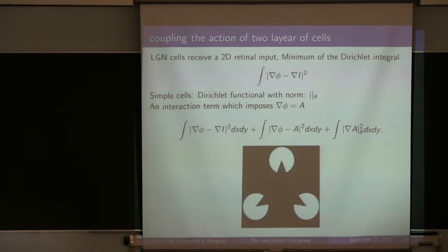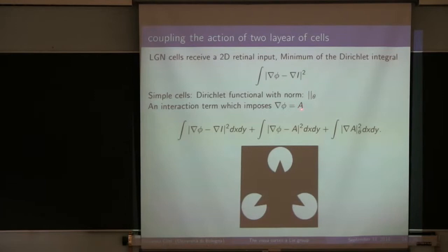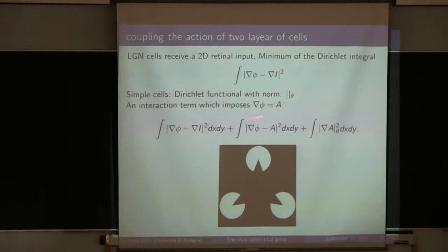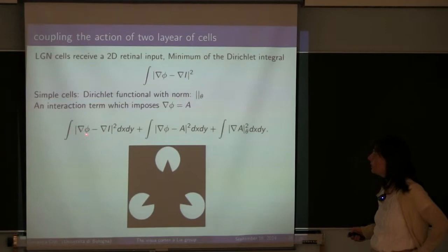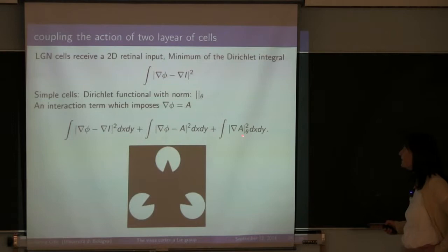In the simple cells, we detect gradient. We introduce an interaction term, which is that the gradient of phi is A. Let's see more in detail. This first term here is the retinex. We start with an image, we look for another function which differs from this one by anharmonic. This was the first term.